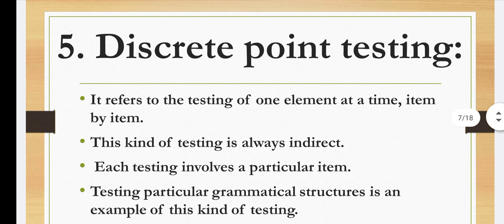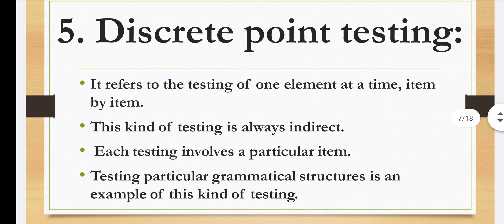Next is discrete point testing. It refers to the testing of one element at a time, item by item — we consider a single point at a time. This kind of testing is always indirect. Each testing involves a particular item. Testing a particular grammatical structure is an example — we check where the child placed the verb, the subject, the object, carefully examining each particular item.